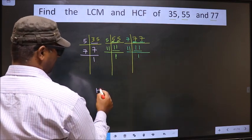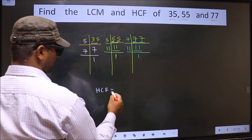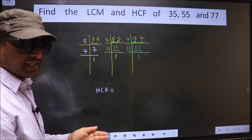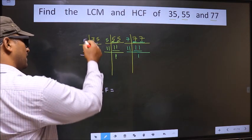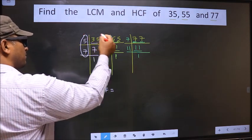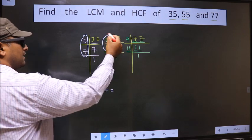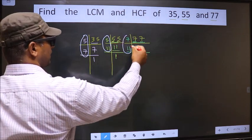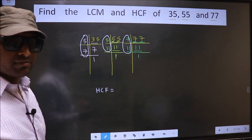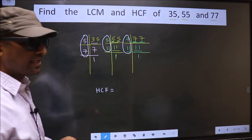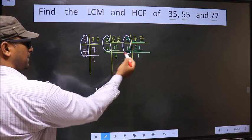Now our HCF is—HCF is the product of numbers which should be present over here, and here, and also here.